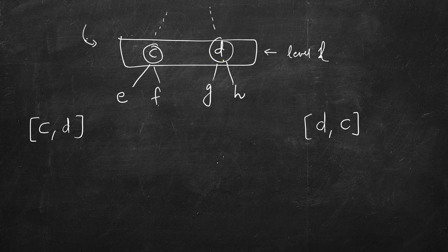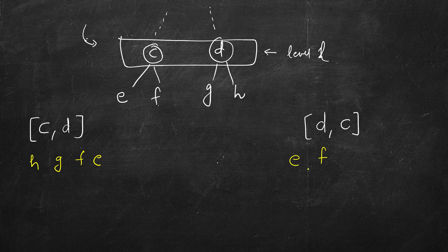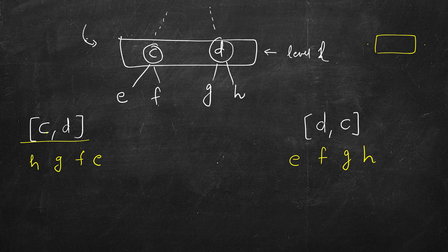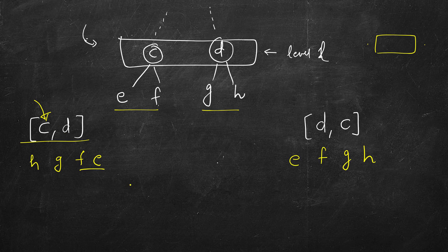There are two possibilities: if C and D were printed left to right, then the next level should be printed in reverse order — H, G, F, E. If D and C were printed right to left, then the next level goes left to right — E, F, G, H. To achieve this, instead of a regular queue which only supports push at the end, we use a deque (dq) which supports push at both the beginning and the end.